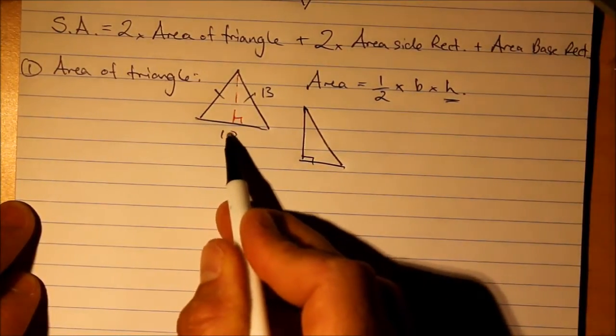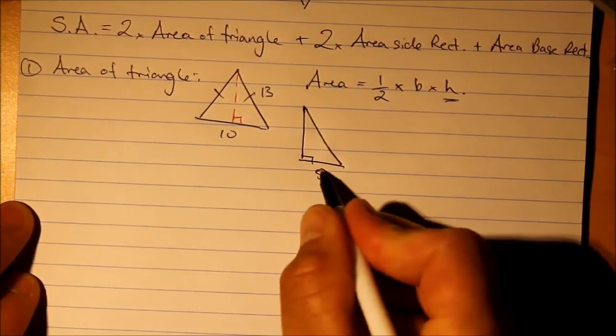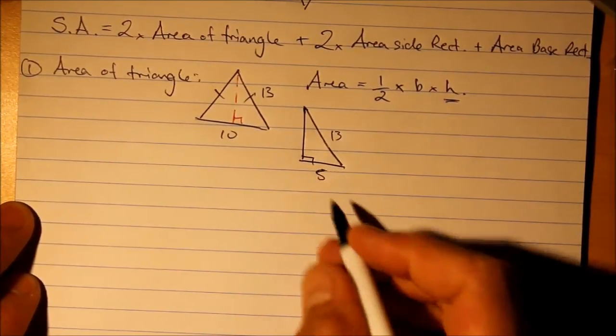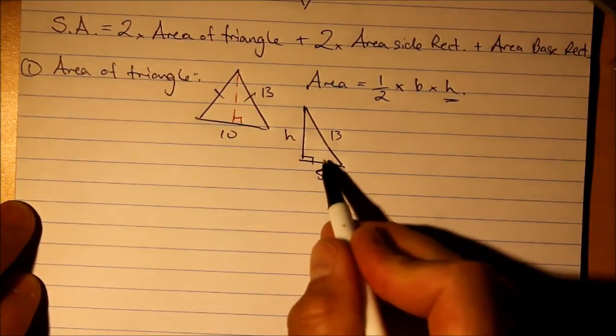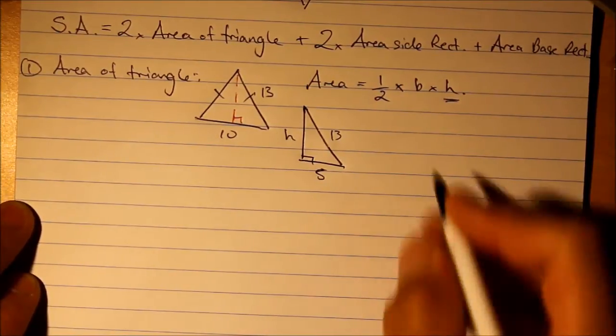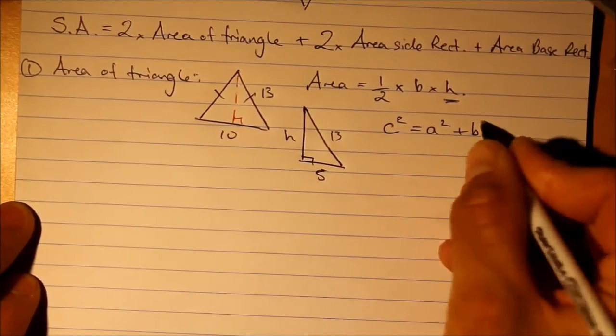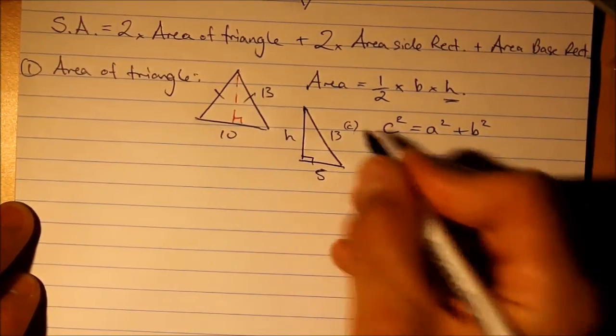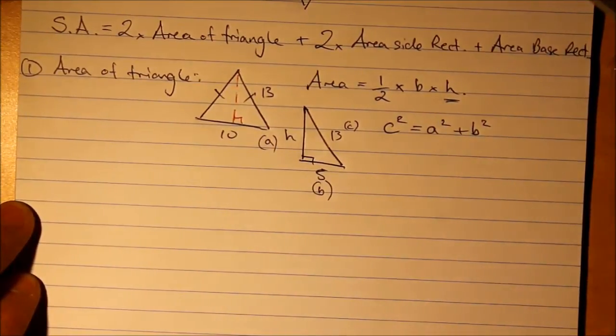Now, if that bisects that, then we know that must be 5, and that's 13. We'll call that h for height. Now... Ha-ha! You say? Pythagoras. Yes, and you would be right. C squared equals a squared plus b squared. C is the hypotenuse, and a and b are the two shorter sides.